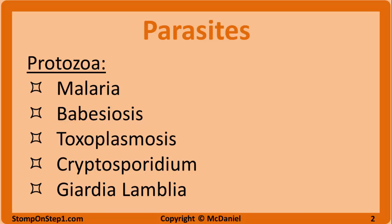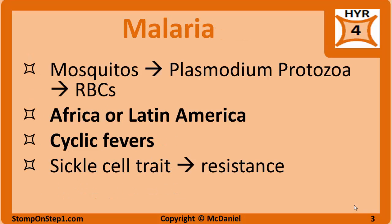The other main group of parasites that cause disease in humans is the helminths, or worms. However, they are largely low-yield material, so we will just briefly cover this group towards the end of the video. We will start with malaria, which I give a high-yield rating of 4 on a scale from 1–10, based on how frequently this topic appears in retired Step 1 questions.